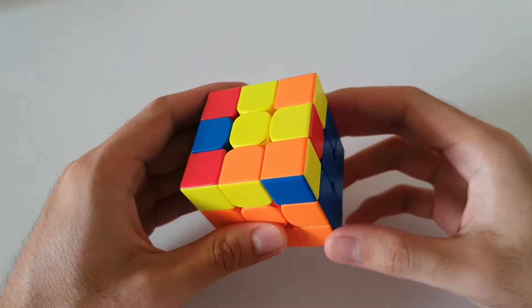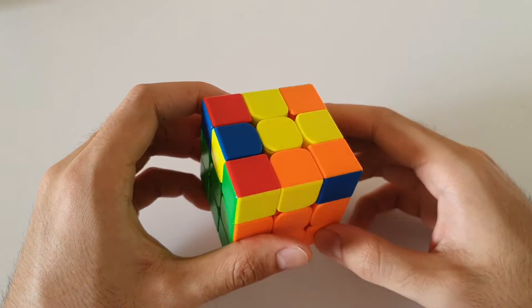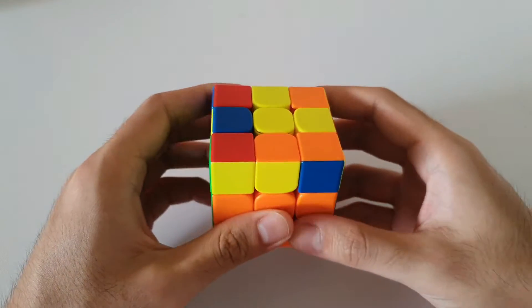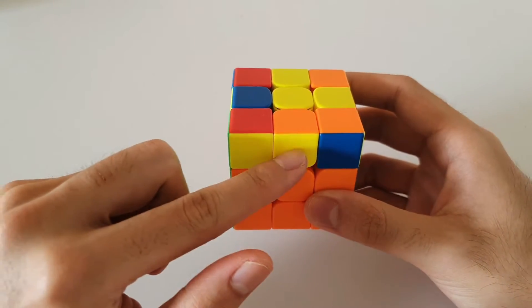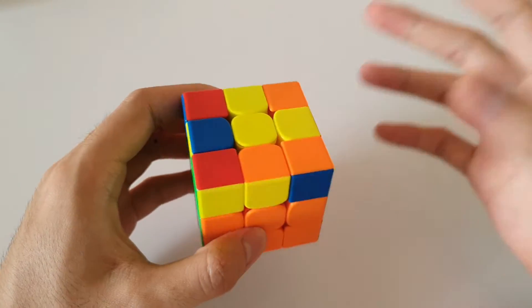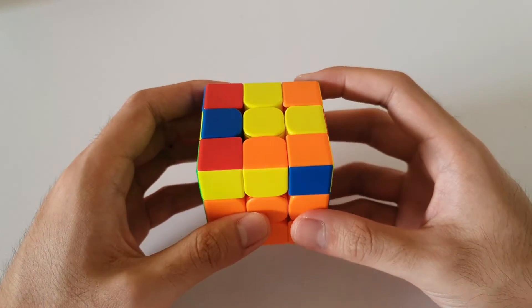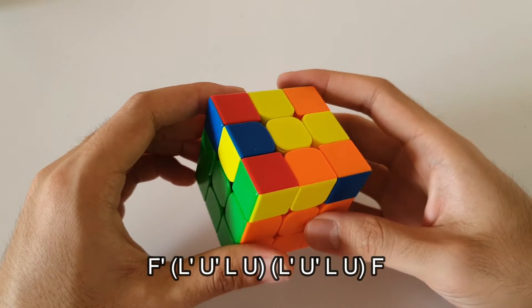Next case we have here is the mirror of the previous case. So in this case, we have the yellow headlight pointing to the right side and the 2x1 bar is on the front near the left. And so for this case, we can use the lefty version of the previous algorithm.